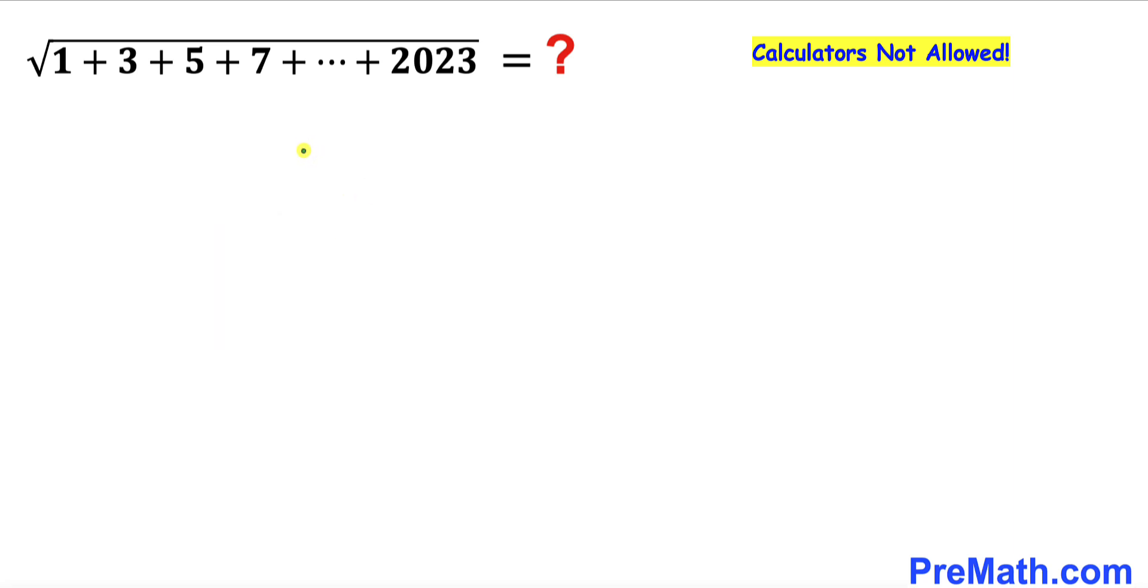Let's go ahead and get started. If we scan this problem inside this radical, we can see there's a series with numbers and their common difference is 2 across the board.